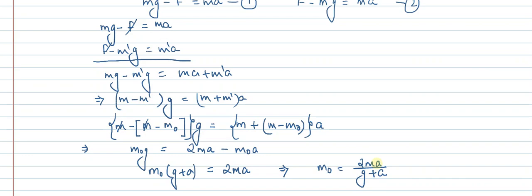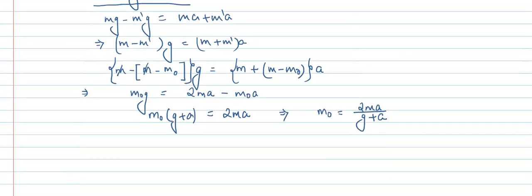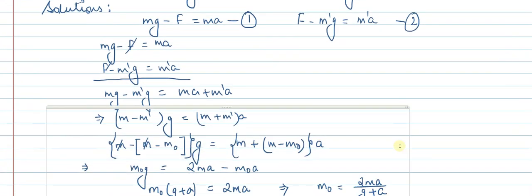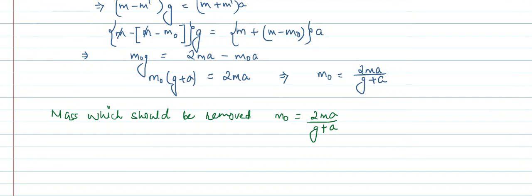From here, the value of m₀ is 2ma divided by g plus a. So m₀ equals 2ma upon g plus a, which is I think option number A. Option A is our answer. Thank you.